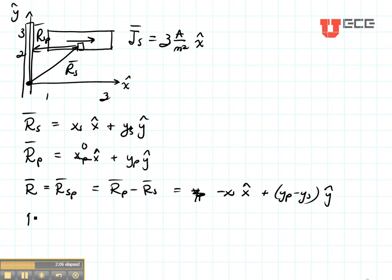The unit vector is going to be R divided by the magnitude of R. And the magnitude of R is going to be XS squared plus YP minus YS squared all square rooted.